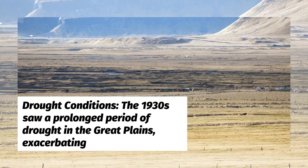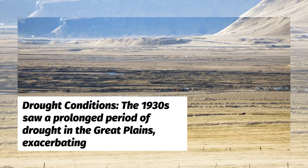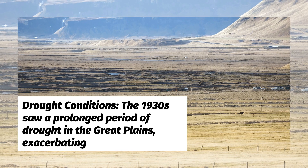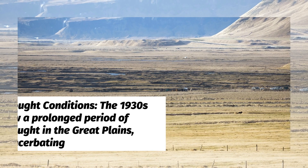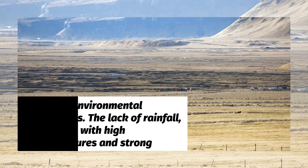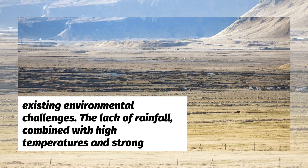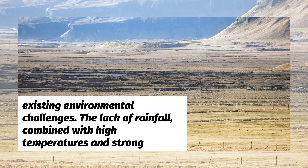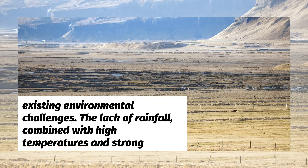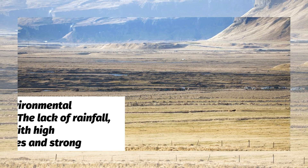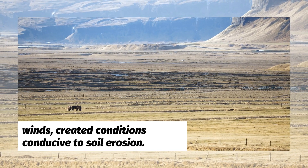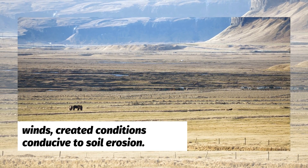Drought Conditions: The 1930s saw a prolonged period of drought in the Great Plains, exacerbating existing environmental challenges. The lack of rainfall, combined with high temperatures and strong winds, created conditions conducive to soil erosion.